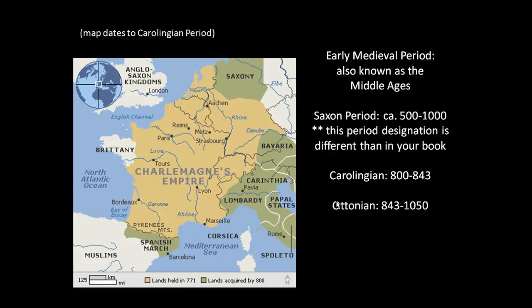The Carolingian period is named after the Emperor Charlemagne. He came into power and marked the first time since the fall of Rome that we see centralized power ruling over a large area. On Christmas Day in the year 800, Pope Leo III crowned Charles the Great, a.k.a. Charlemagne, as the Emperor of what later becomes the Holy Roman Empire, with some different territorial modifications.